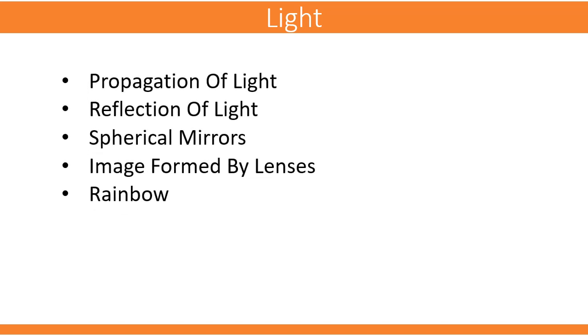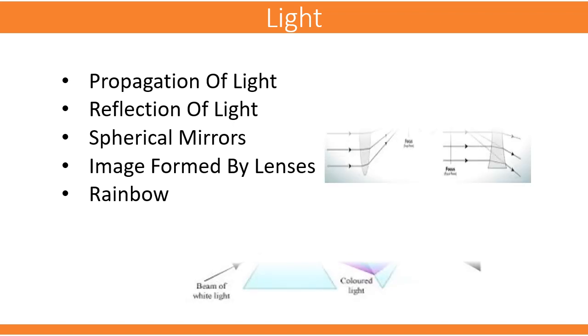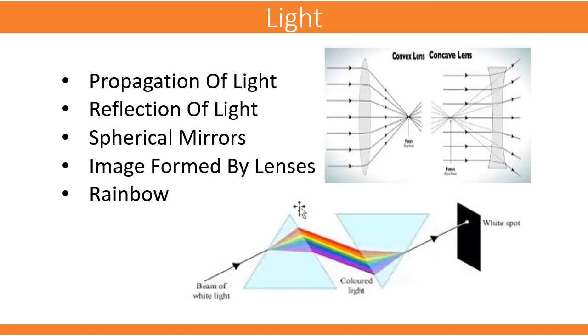Next chapter is Light, which is one of the most important topics in physics. Under this topic, we will learn how light propagates or travels. We will study how reflection of light takes place and reflection through spherical mirrors. We will see how images are formed by lenses. Finally, we will study how rainbows are formed in the sky.